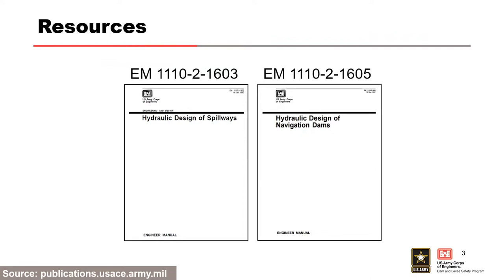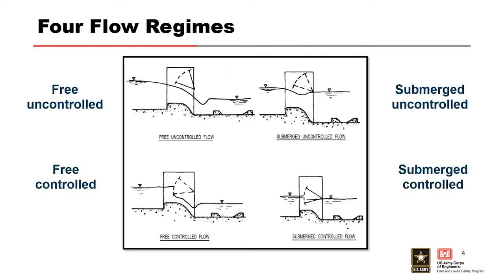If you are curious about that Willamette Basin document, let us know. There are generally four flow regimes for spillways, and the name of each regime describes the effects of tailwater and headwater conditions on discharge capacity. The discharge for a free flow regime is not affected by tailwater, whereas discharge will be reduced by tailwater effects for a submerged flow regime.